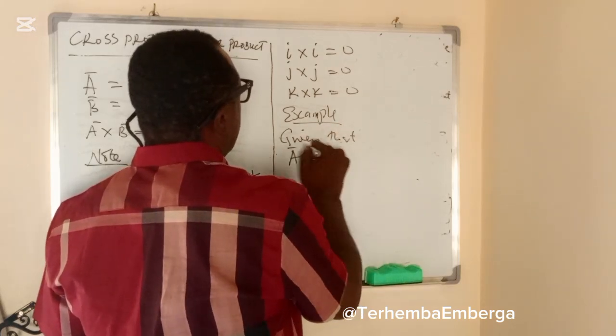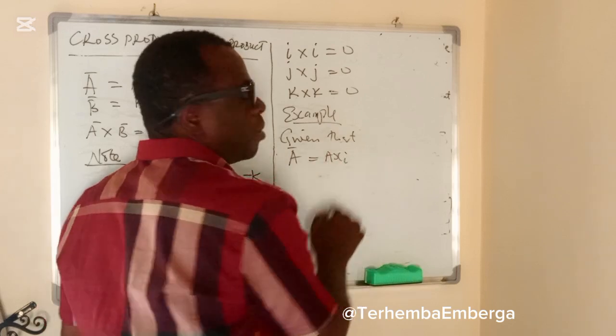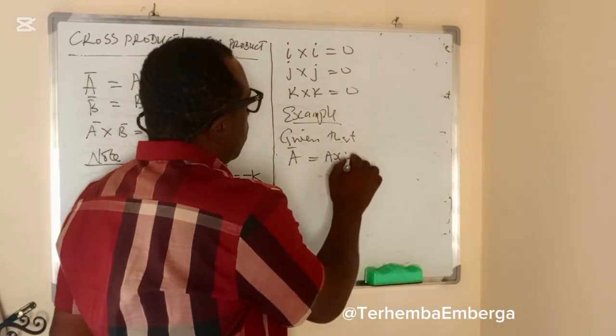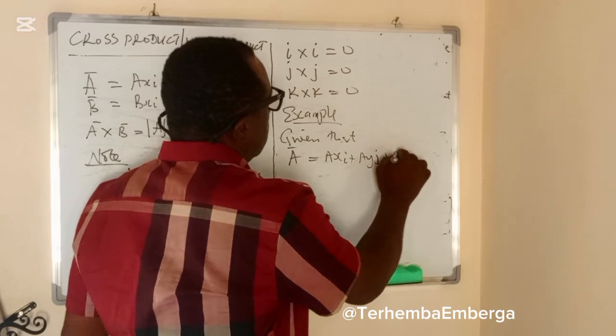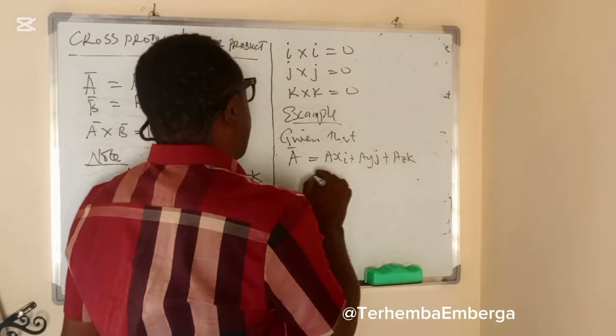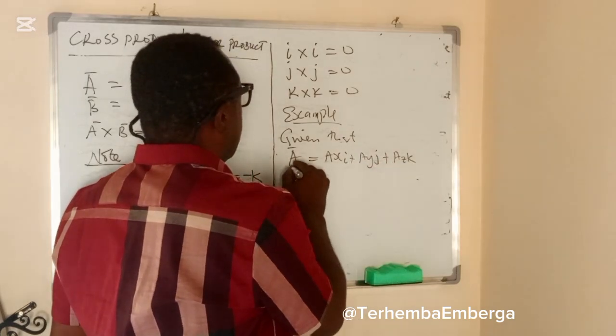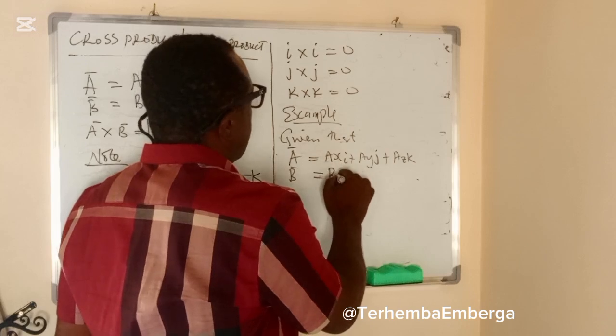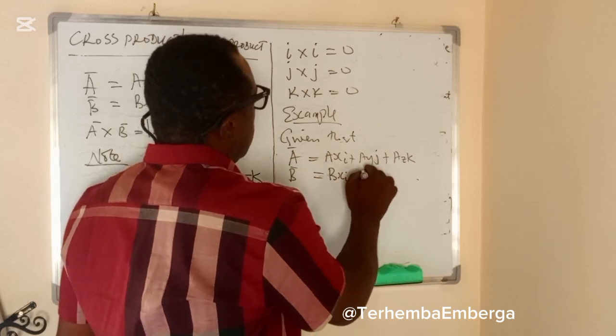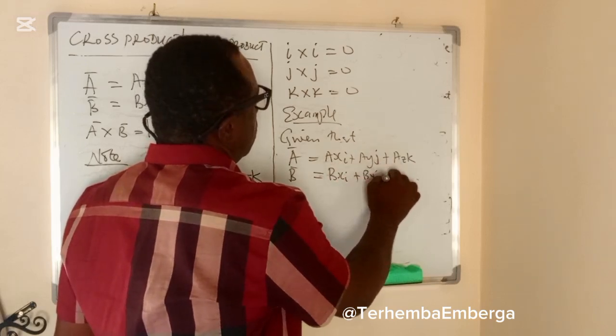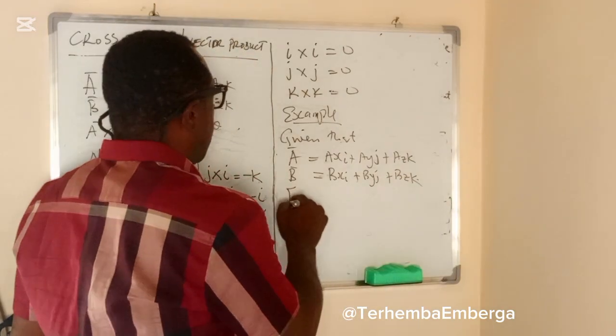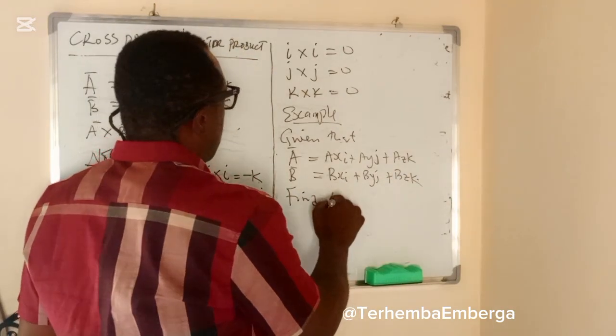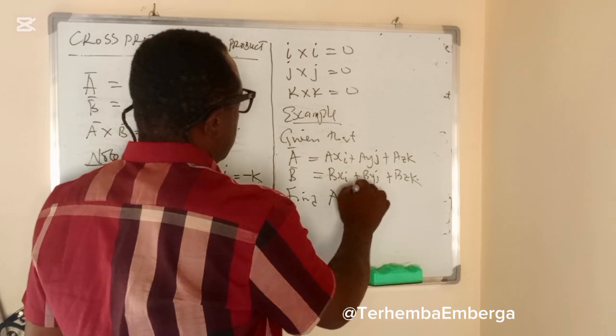vector A is equal to AXI plus AYJ plus AZK and B is BXI plus BYJ plus BZK, find A cross B.